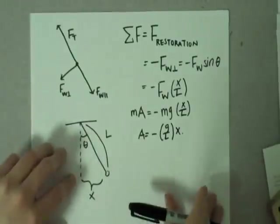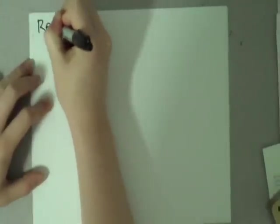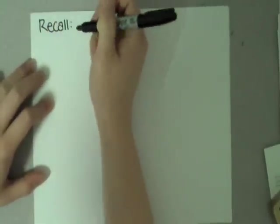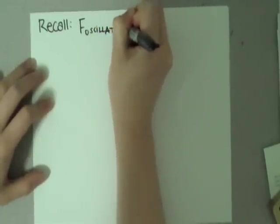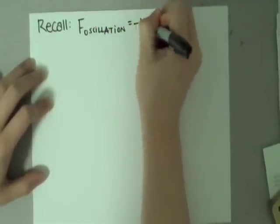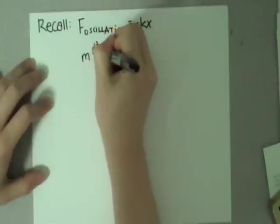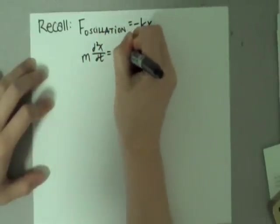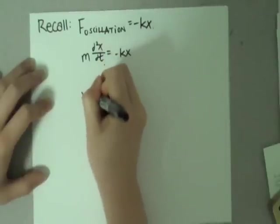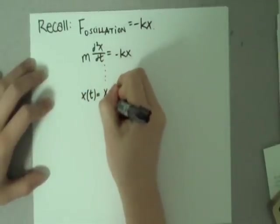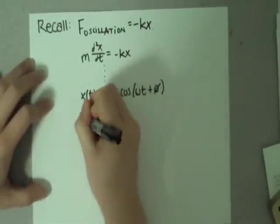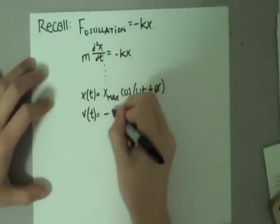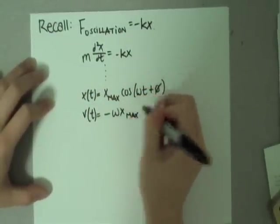Recall that this is an oscillation problem — there are forces trying to pull it back to equilibrium, and then it goes past equilibrium, and then back again. So the oscillation equations are completely applicable. Force of oscillation equals negative kx, and using sum of forces, we get that MA equals negative kx. Really this is a differential equation: M times the double derivative of x with respect to t equals negative kx. If we solve this, we get that x as a function of t equals the amplitude, the maximum value of x, times cosine of (omega t plus phi), where phi is the phase displacement.